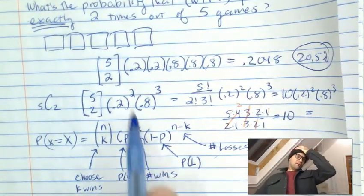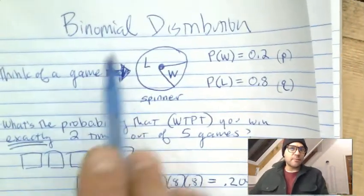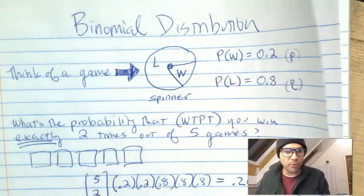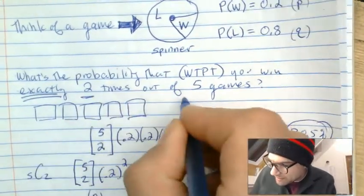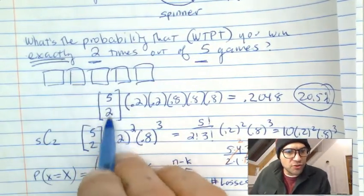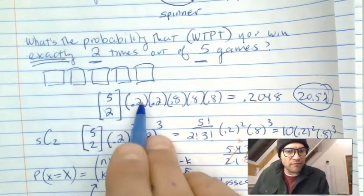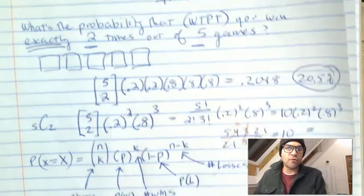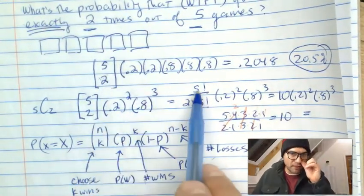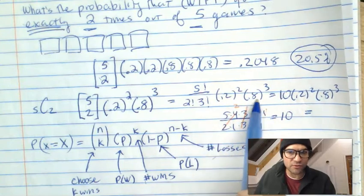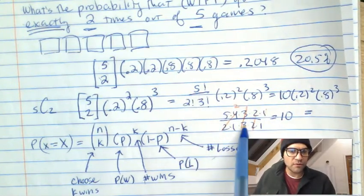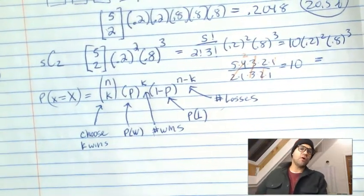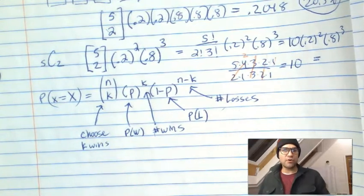To recap: we have a spinner game where the likelihood of winning is P = 0.2 and losing is Q = 0.8. The probability of winning exactly two times out of five is found by choosing the two winners out of five — five choose two equals 10 — multiplied by 0.2 squared times 0.8 cubed, giving 0.2048. Let's apply the formula again: win four out of five games.